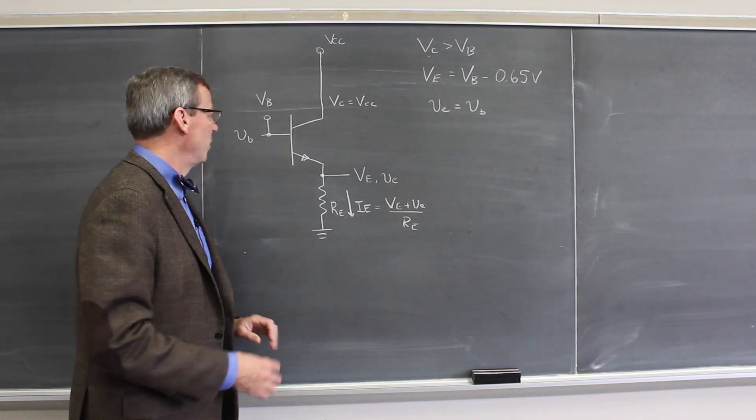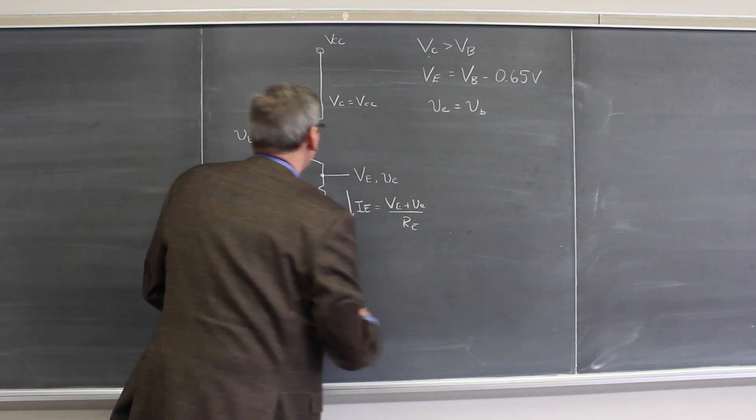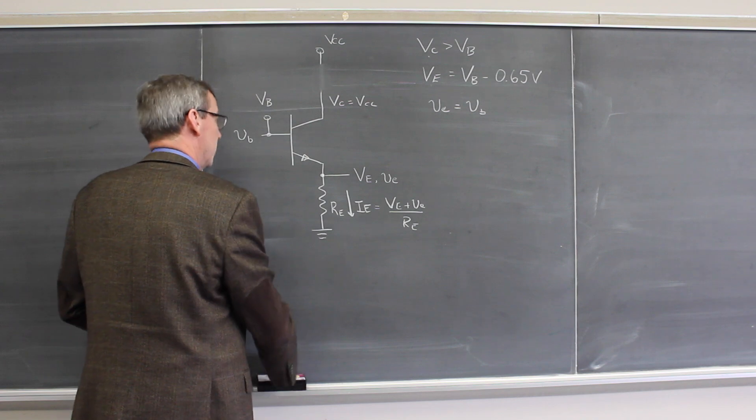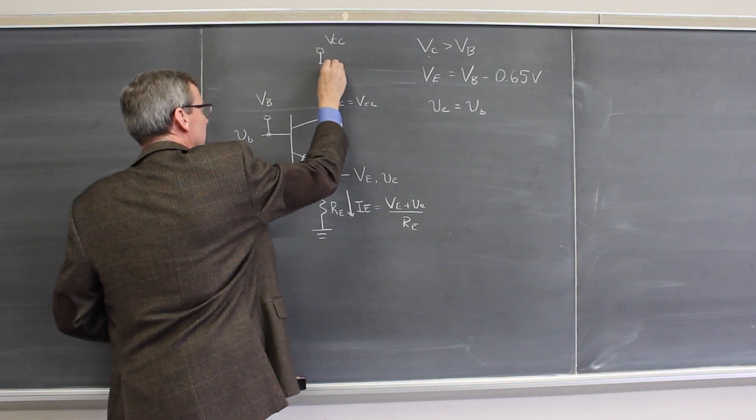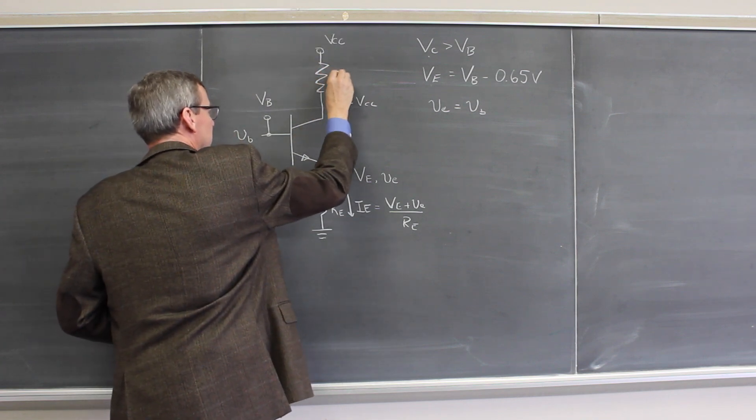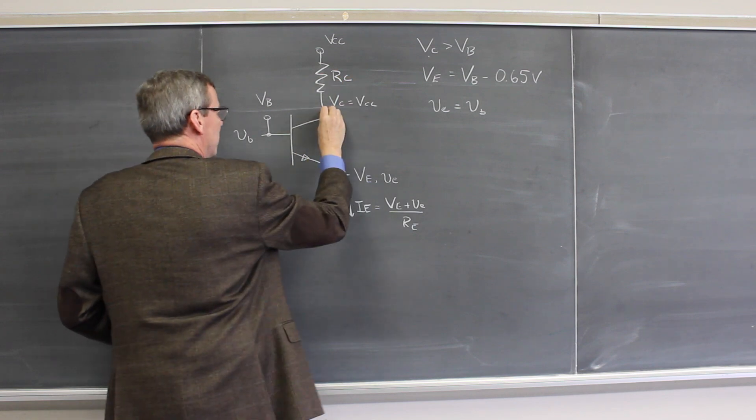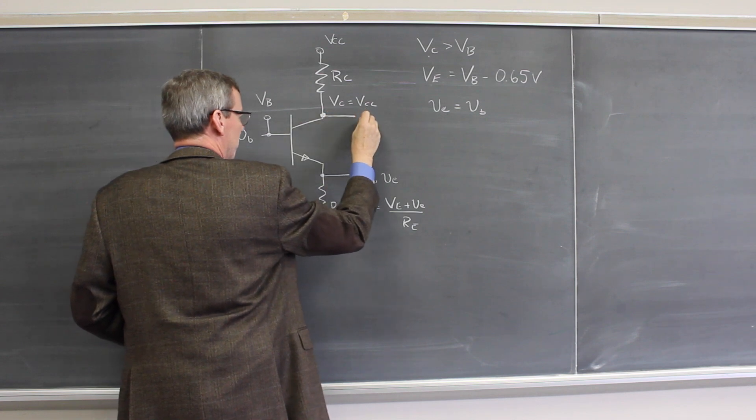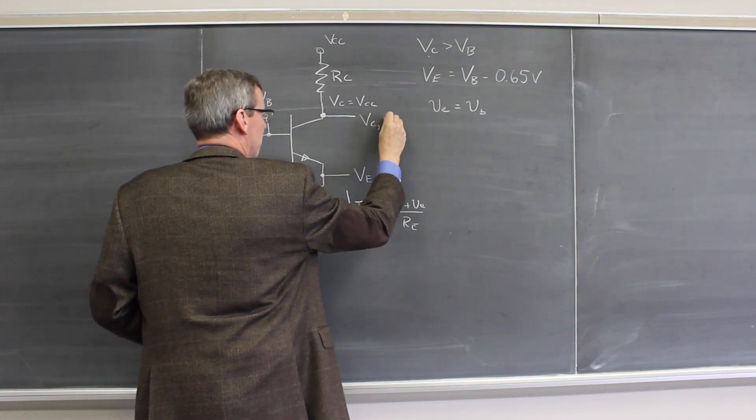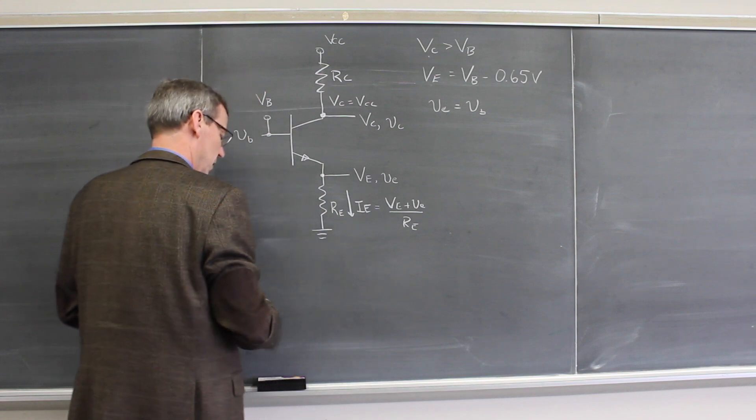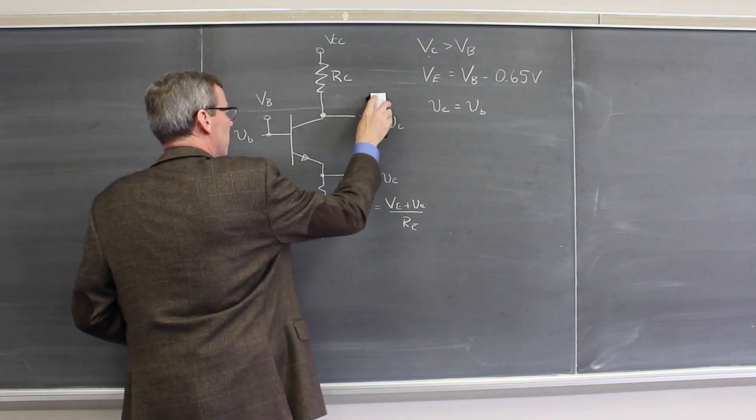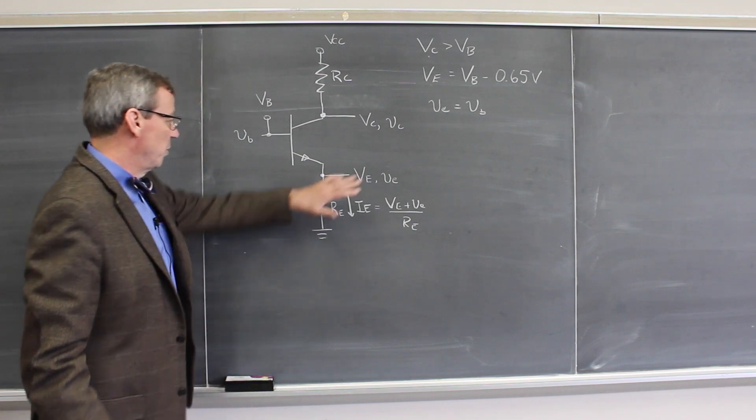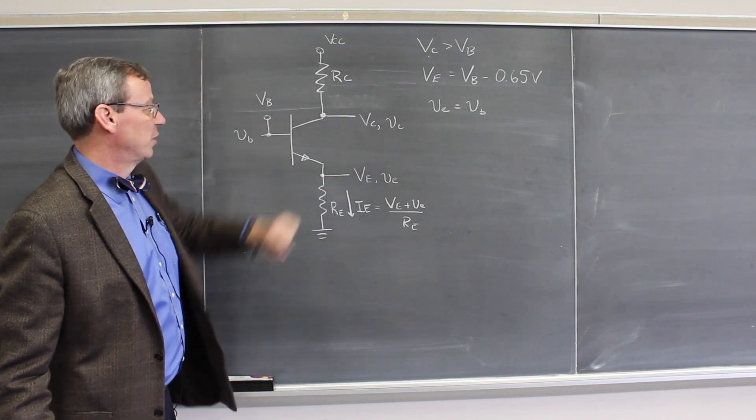What we're going to do now is vary this a little bit. We're going to add a resistor between the power supply and the collector, we'll call it RC, and we're going to take the output at the collector. So there will be a V collector and presumably an AC signal. The collector voltage is no longer going to be a copy of VCC. We won't be doing anything with the emitter anymore, we'll be looking at the collector.